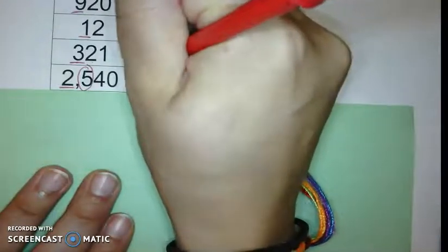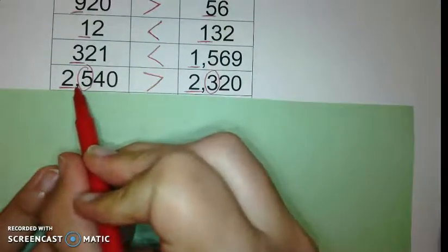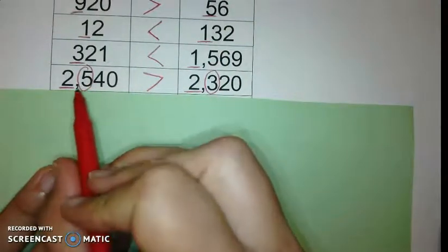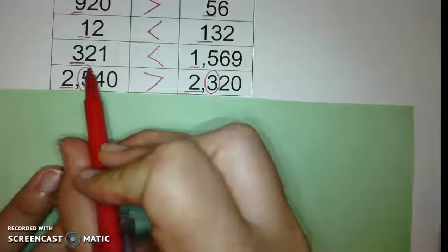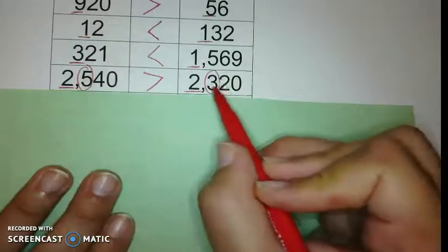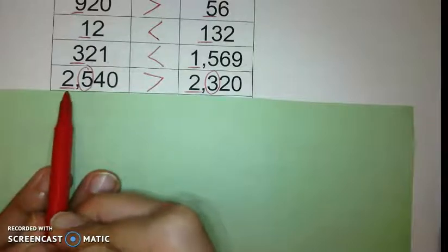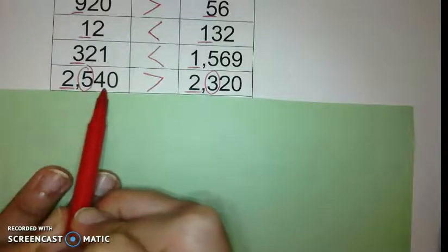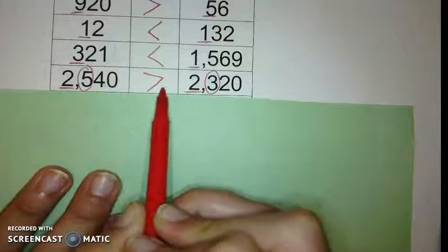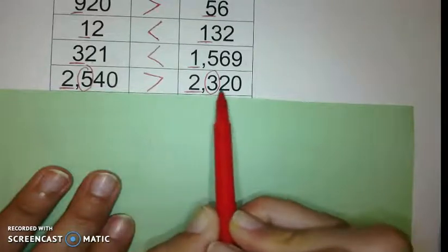We're going to put the greater than symbol having the mouth open towards the 2,540 because that number is bigger. 5 in the hundreds is bigger than 3 in the hundreds. Read it with me. 2,540 is greater than 2,320.